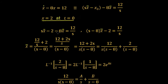We want to find X-bar. Gathering like terms: (s minus 8)·X-bar minus 2 equals 12/s. Transposing for X-bar gives X-bar equals (12/s plus 2) divided by (s minus 8). Taking the common factor of s in the numerator gives (12 plus 2s) divided by s(s minus 8). Splitting into two fractions: 12/[s(s-8)] plus 2s/[s(s-8)], and the s cancels in the second term, leaving 12/[s(s-8)] plus 2/(s-8).